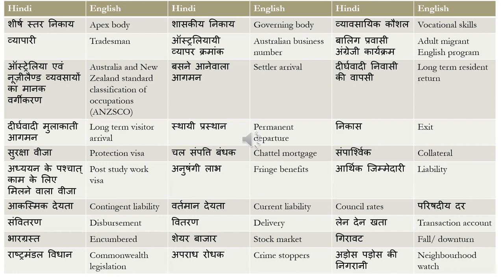'Chal Sampatti Bandhak' is chattel mortgage — Chal Sampatti is movable property, and Bandhak is mortgage. 'Samparshvik' means collateral. 'Adhiyan ke Pashchat Kaam ke Liye Milne Wala Visa' is a post-study work visa. 'Anushangi Lab' is fringe benefits — the extra or excess things that you get.